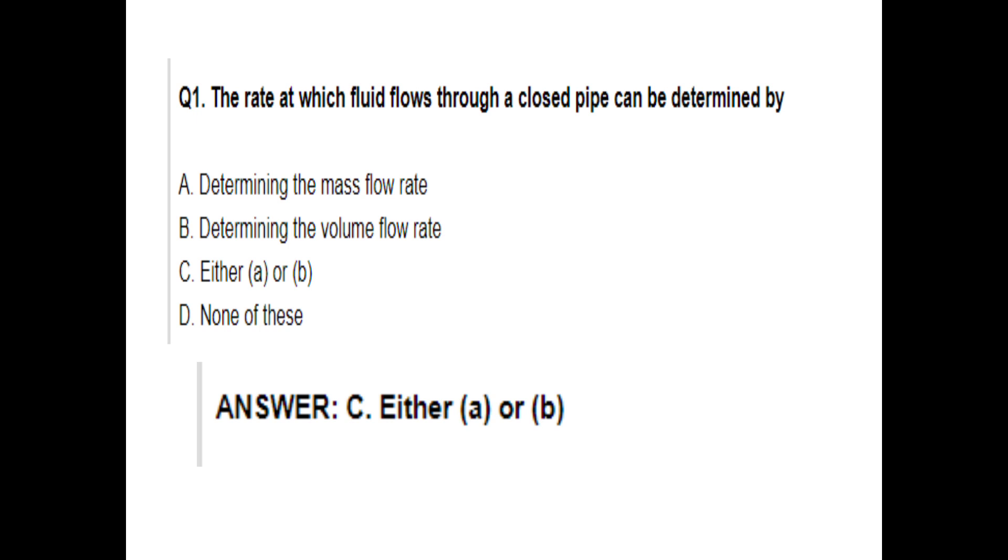First question: the rate at which fluid flows through a closed pipe can be determined by. This is the theory that we have studied in the flow measurement topic. Either the rate at which fluid flows through a closed pipe can be determined by determining the mass flow rate or volume flow rate, either A or B or none of these. It is option C, either A or B.